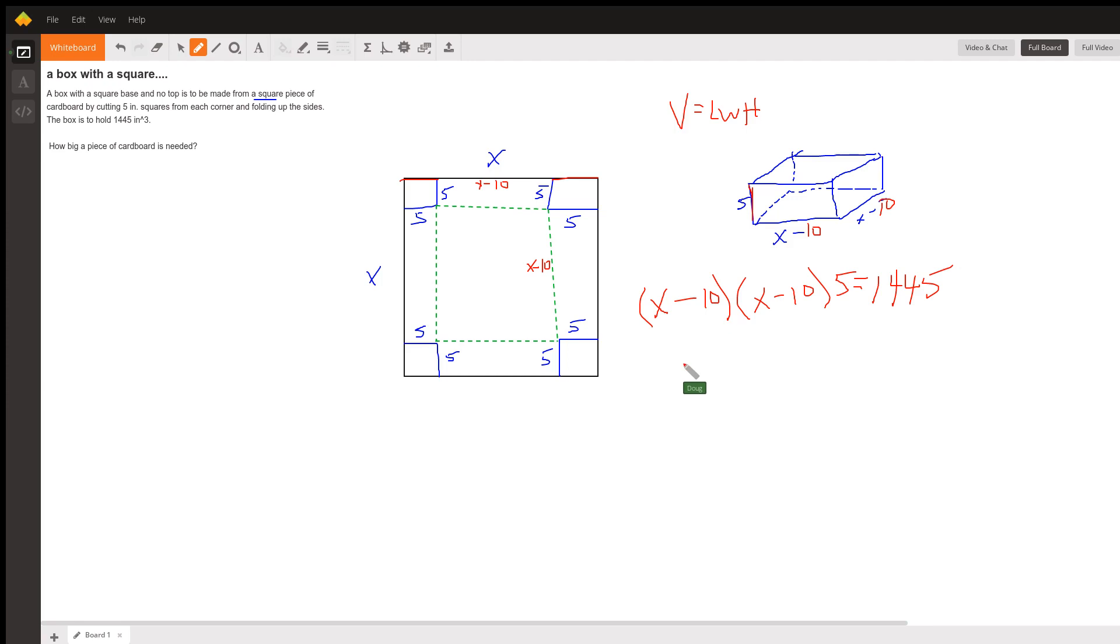If I divide both sides by 5 and multiply X minus 10 times X minus 10 or square that binomial, I will get X squared minus 20X plus 100 equals whatever 1445 divided by 5 is, and I think that's 289.